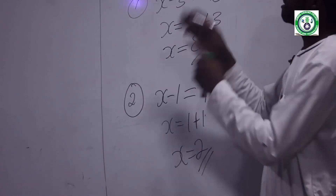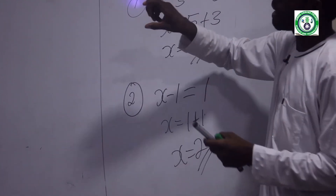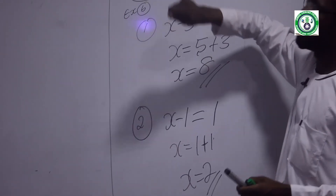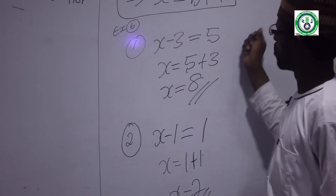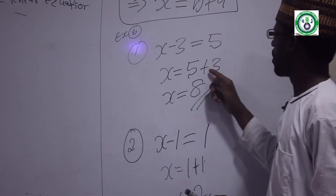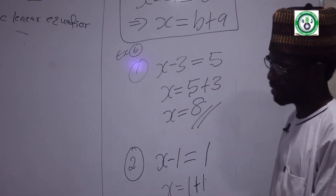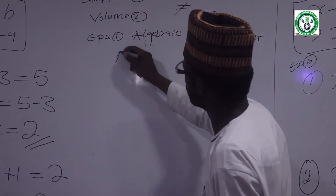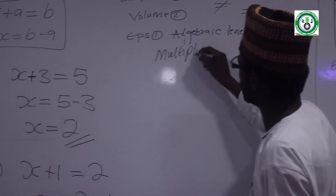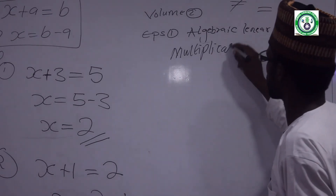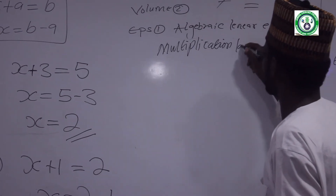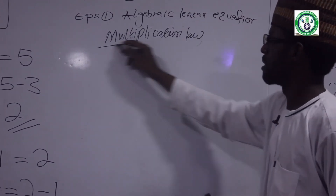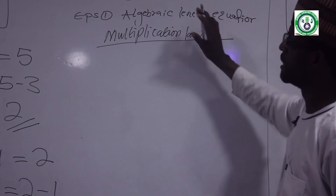Now, for multiplication in algebraic linear equations: when we multiply, we divide on the other side. Multiplication of algebraic linear equations — if you multiply on one side, divide on the other.